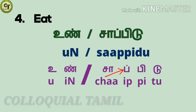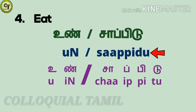Ip, a consonant. P, a short zone letter. To, a short zone letter — while speaking, to may also sound as do in some words. Together: saapidu. So you can use un or saapidu for the verb 'eat'.